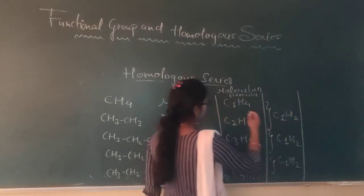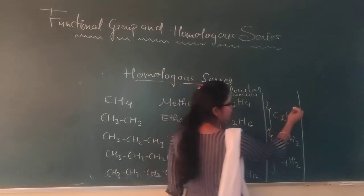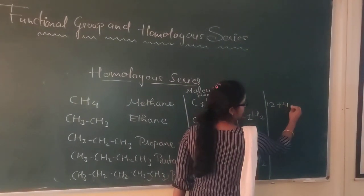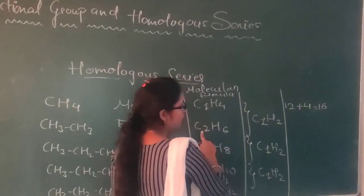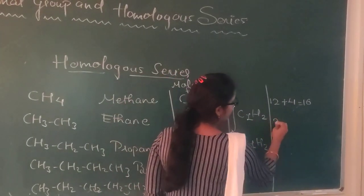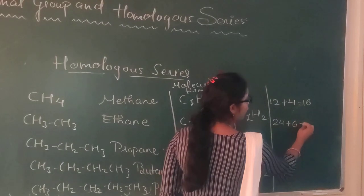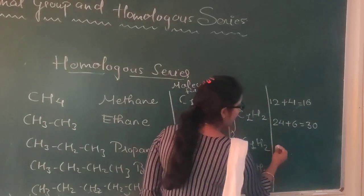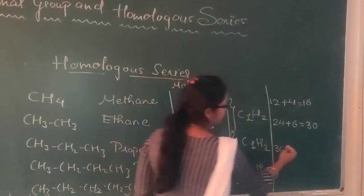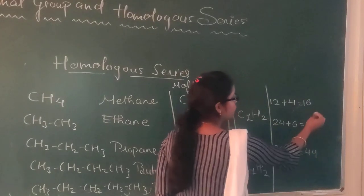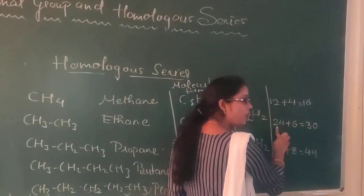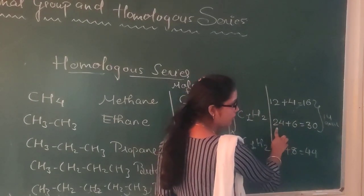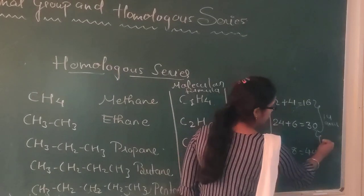Jaise, atomic mass of carbon is 12, and atomic mass of hydrogen is 1. So methane molecular mass: 12 + 4 = 16. Ethane: 2×12 + 6 = 24 + 6 = 30. Propane: 3×12 + 8 = 36 + 8 = 44. Methane molecular mass is 16, and ethane molecular mass is 30 — difference is 14. Ethane molecular mass is 30, propane molecular mass is 44 — difference is 14. So the mass difference between two successive compounds in a homologous series is 14 AMU.